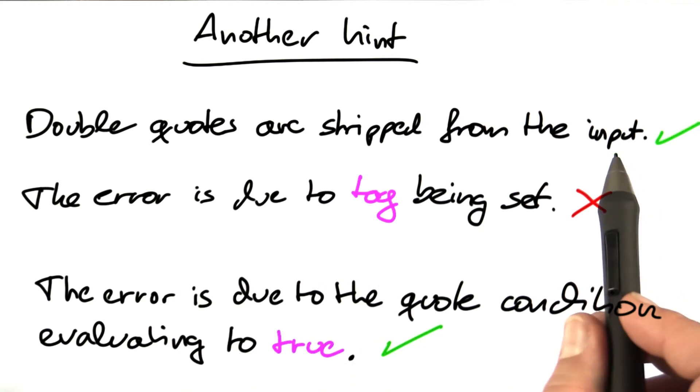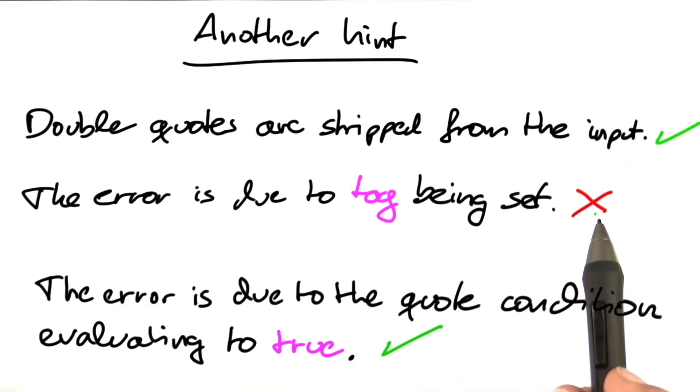So we know at this point: double quotes are stripped, tag is not being set, and the quote condition evaluates to true.